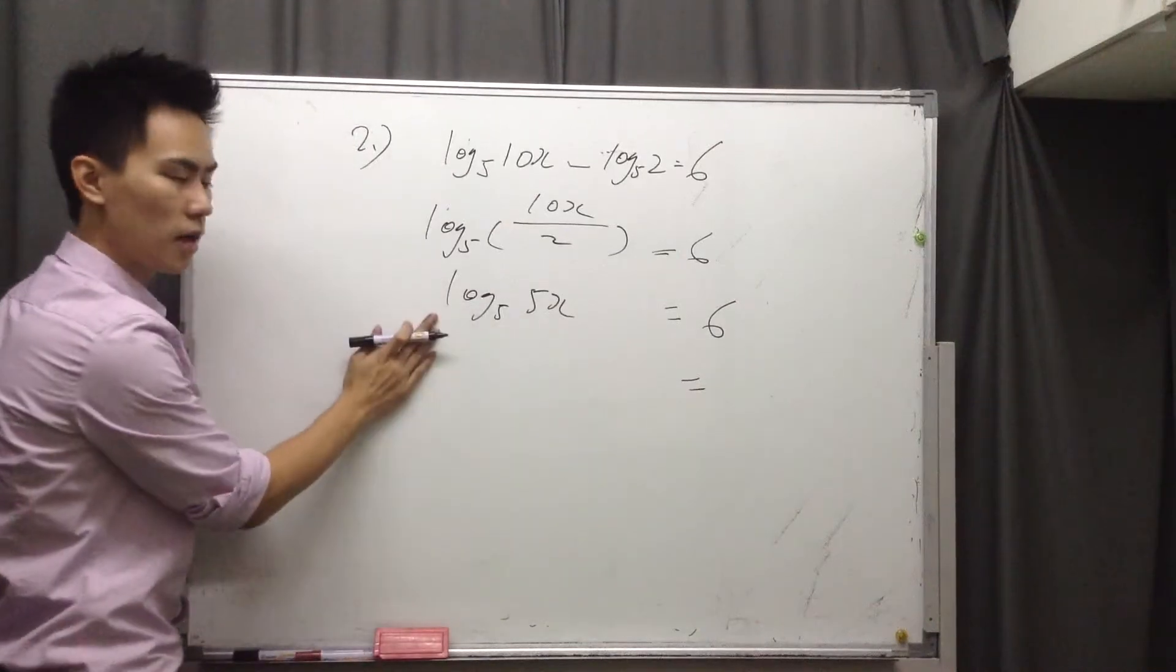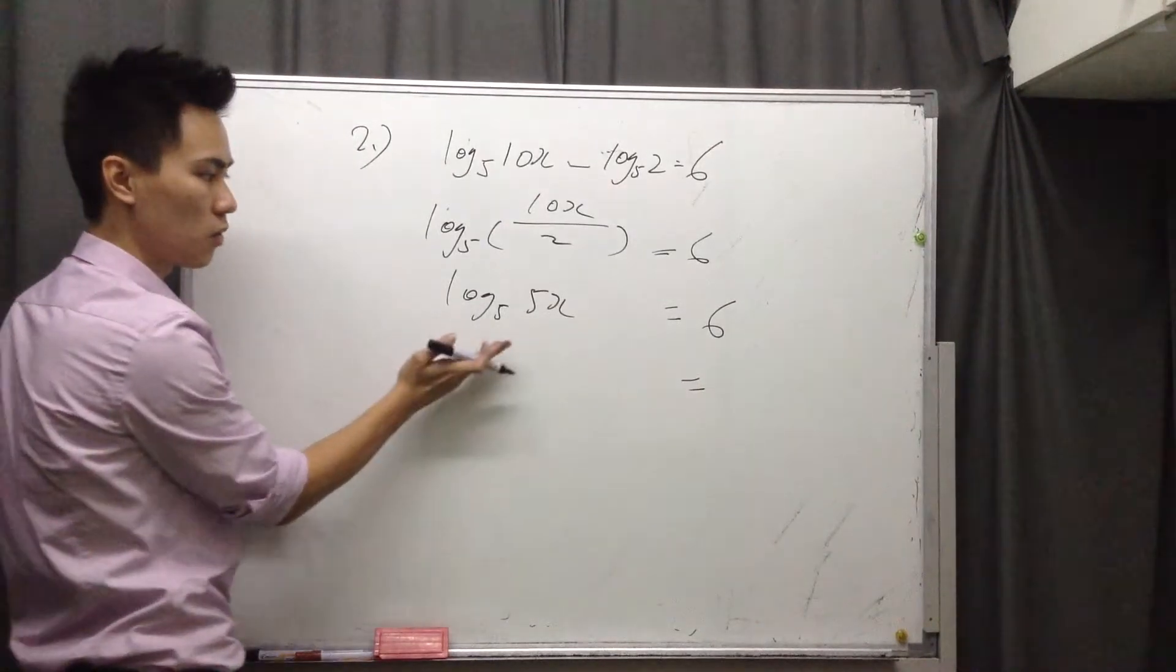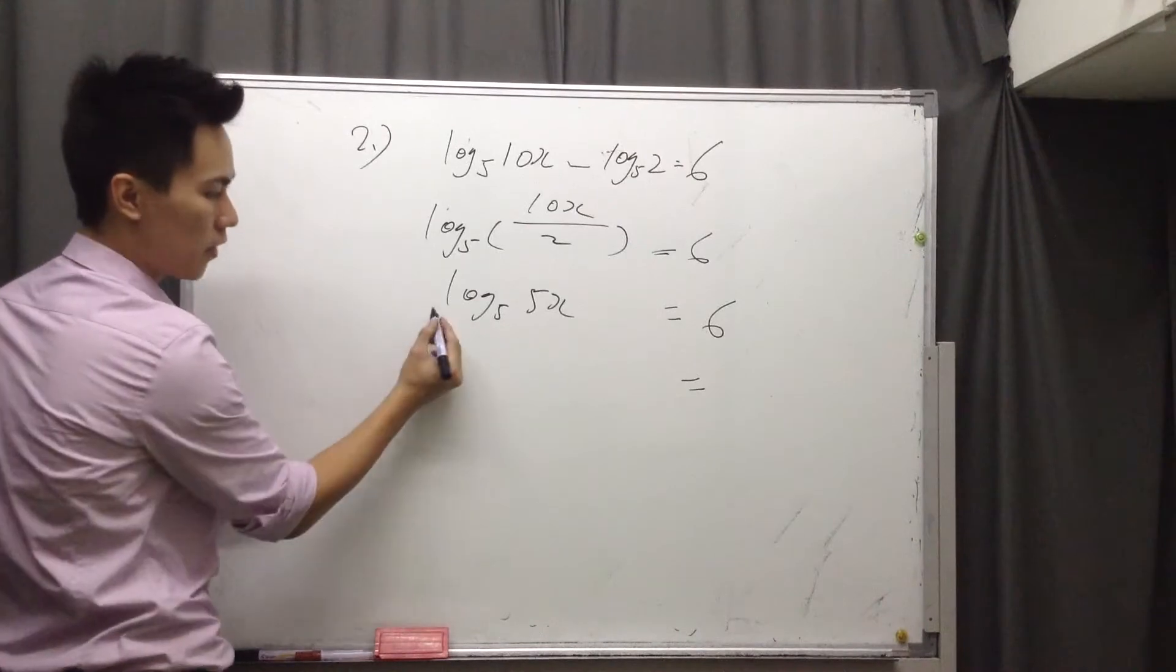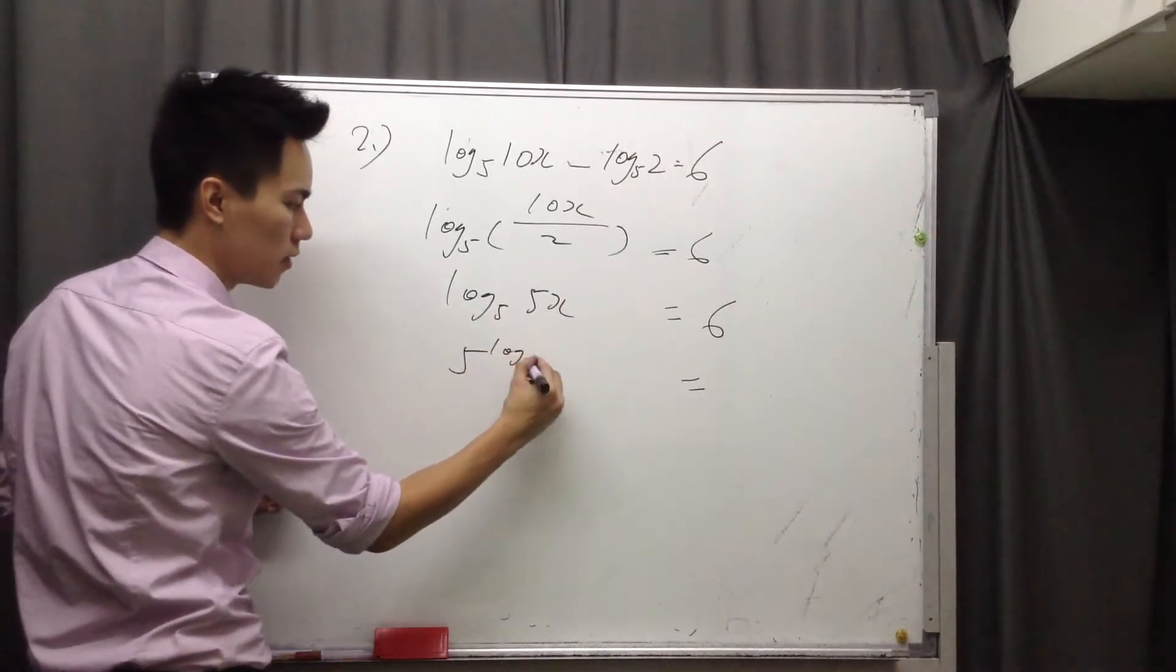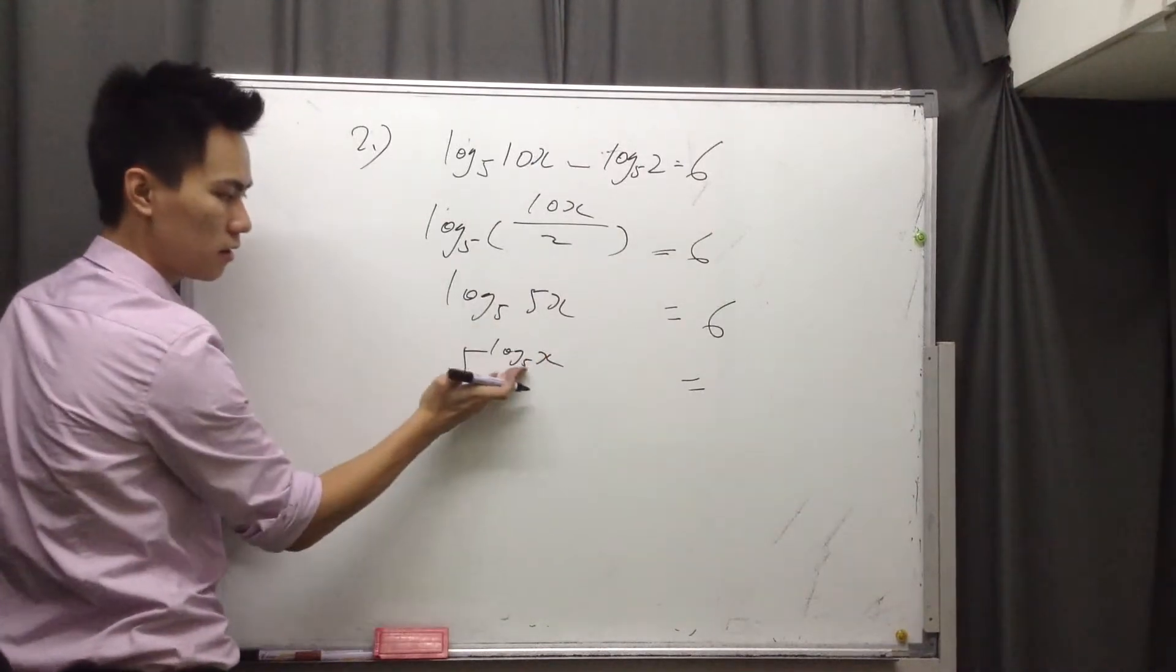So how to eliminate the log 5? Because we want to make x the subject. You remember, we can eliminate the log 5 by raising the base to both sides.